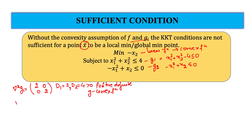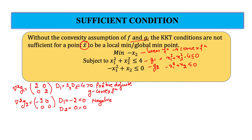Similarly, for G2 the Hessian matrix is [-2, 0; 0, 0]. The principal minor of order 1 is minus 2, which is less than or equal to 0, and the principal minor of order 2 is 0. So this is a negative semi-definite matrix — you can refer to the definiteness of matrix lecture to see how to identify positive definite, negative definite, or semi-definite matrices. Since it is negative semi-definite, G2 is a concave function, which shows that this problem is not a convex programming problem.